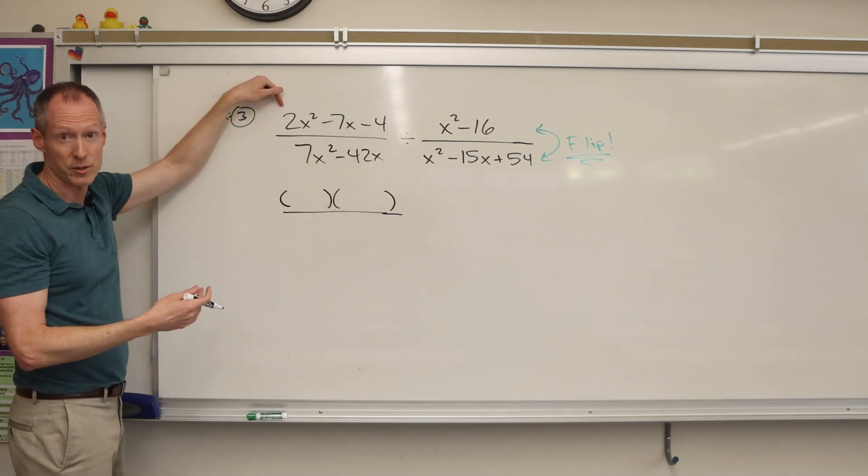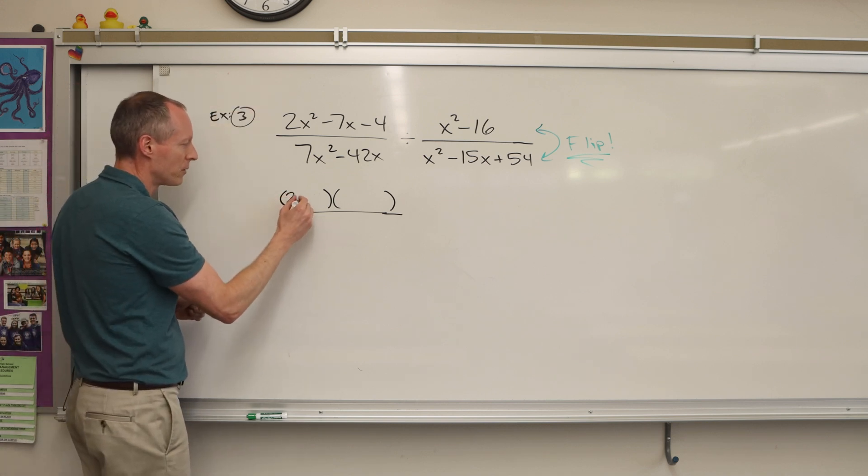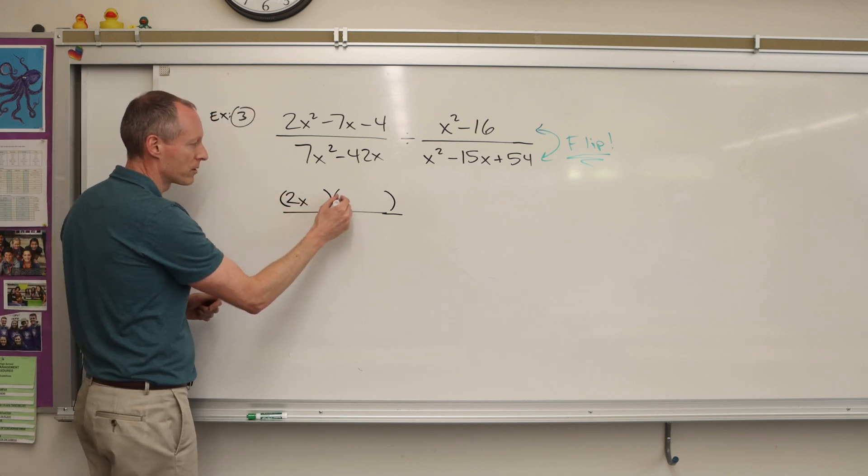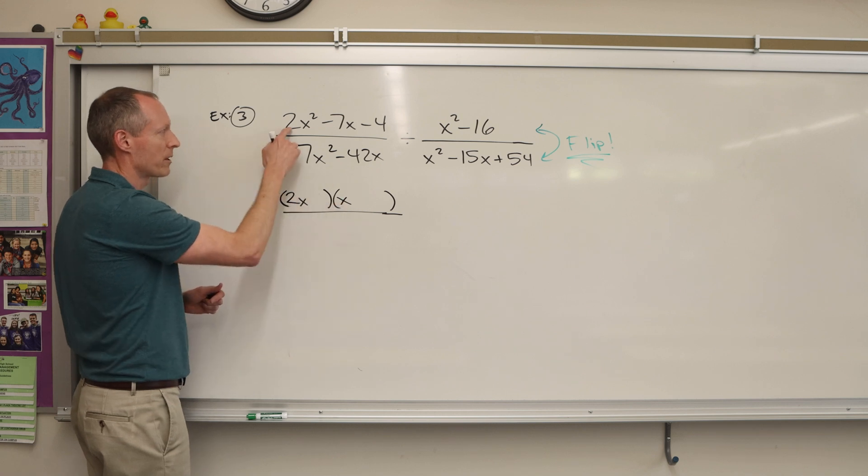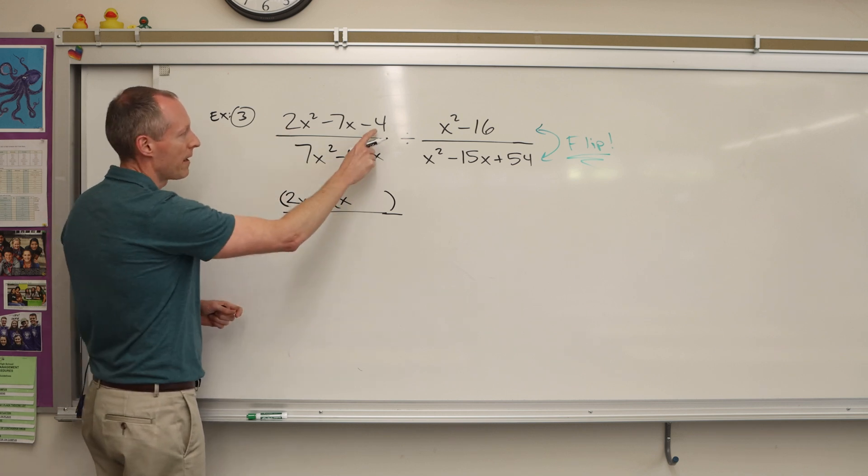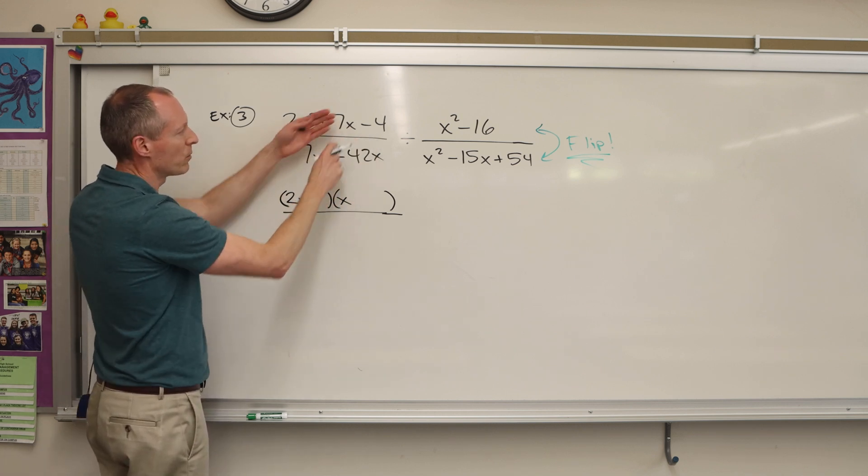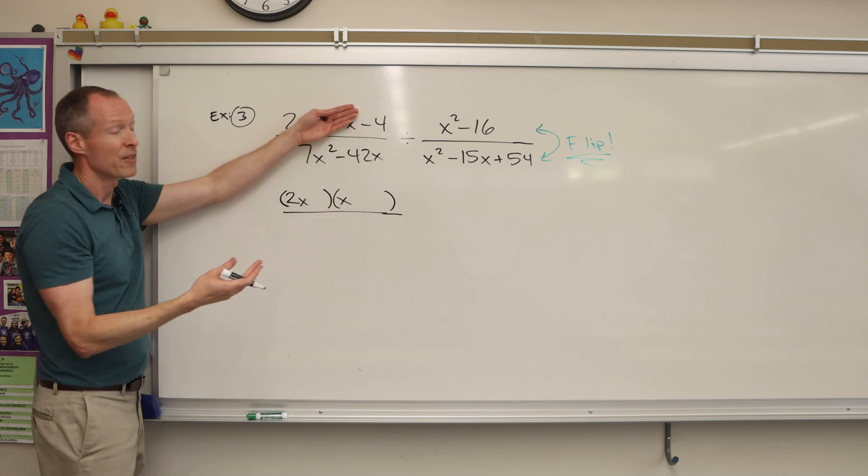The good news is two is prime. If you have a prime number, the only way to get two would be two times one. So it's two x times one x is two x squared. And then we look at the last number. Don't look at the middle one yet. Look at this one. There's two ways of doing that. Four times one, or two times two.